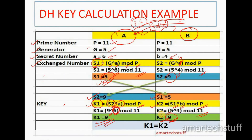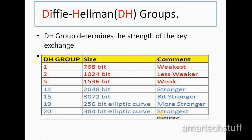There are different Diffie-Hellman groups. When you configure Diffie-Hellman in Phase 1 of an IPSec VPN configuration, you will see groups: Group 1, Group 2, Group 5, Group 14, Group 15, Group 19, Group 20. These groups determine the strength of the key. The higher the group, the larger the key size, and the larger the key size, the stronger it is. For example, Diffie-Hellman Group 1 has a key size of 768 bits and is the weakest, while Group 20 generates the strongest key.